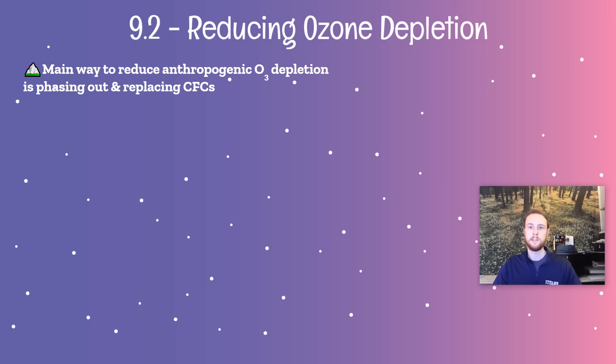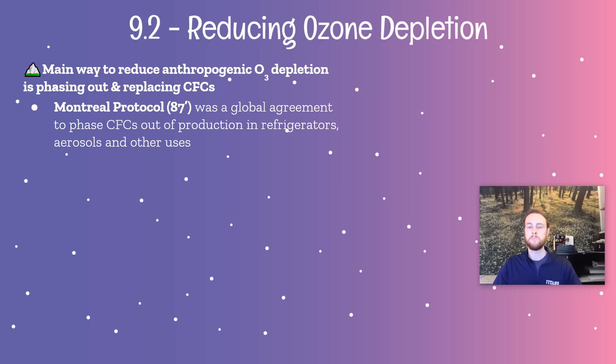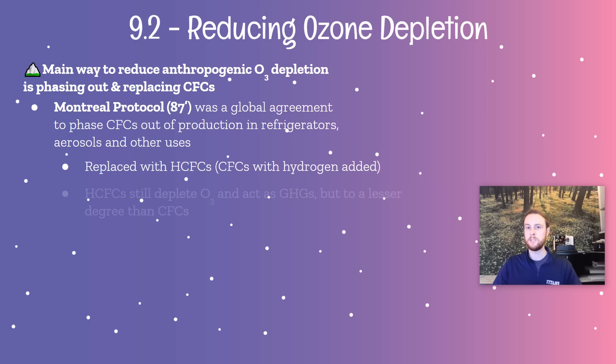In 1987, there was the signing of the Montreal Protocol, which is a global agreement by developed nations to basically phase out CFC use. They decided that CFCs should be replaced with HCFCs, which are just CFCs with hydrogens added. This solved to some degree their propensity for breaking down ozone — it made them less ozone depleting — but they're still pretty potent greenhouse gases. We'll take a look at a graphic which can help us understand these alternatives.